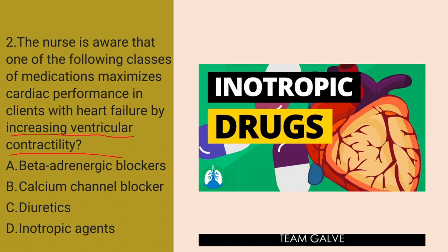Very good to those who got it right. If you got this one, you probably watched my very recent upload about LevoFed — a nursing drug study about LevoFed. If you haven't seen it, it's in the nursing pharmacology playlist. Letter D is the right answer. Inotropic agents are administered to increase the force of the heart's contractions, thereby increasing ventricular contractility and ultimately increasing cardiac output. Beta-adrenergic blockers and calcium channel blockers decrease the heart rate and ultimately decrease the workload of the heart. Diuretics are administered to decrease the overall vascular volume, also decreasing the workload of the heart.